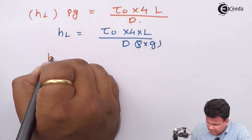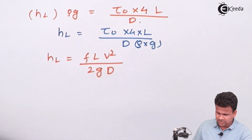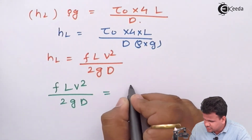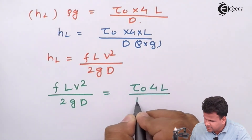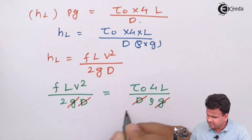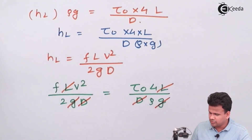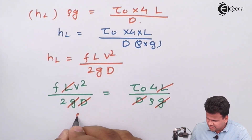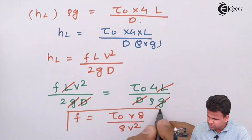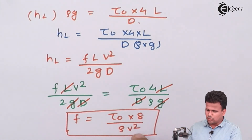The head loss is also given by Darcy-Weisbach: HL = FLV² / (2gD). Setting this equal to 4τ₀L / (Dρg) and simplifying — cancelling g, D, and L from both sides — we arrive at: F = 8τ₀ / (ρV²). This is how the friction factor is related to shear stress.